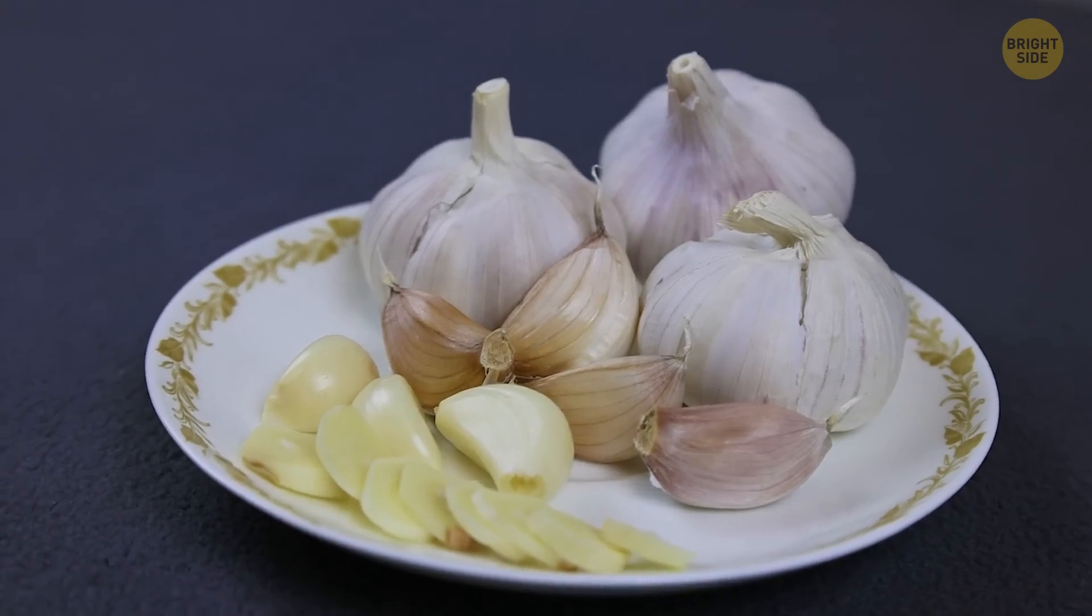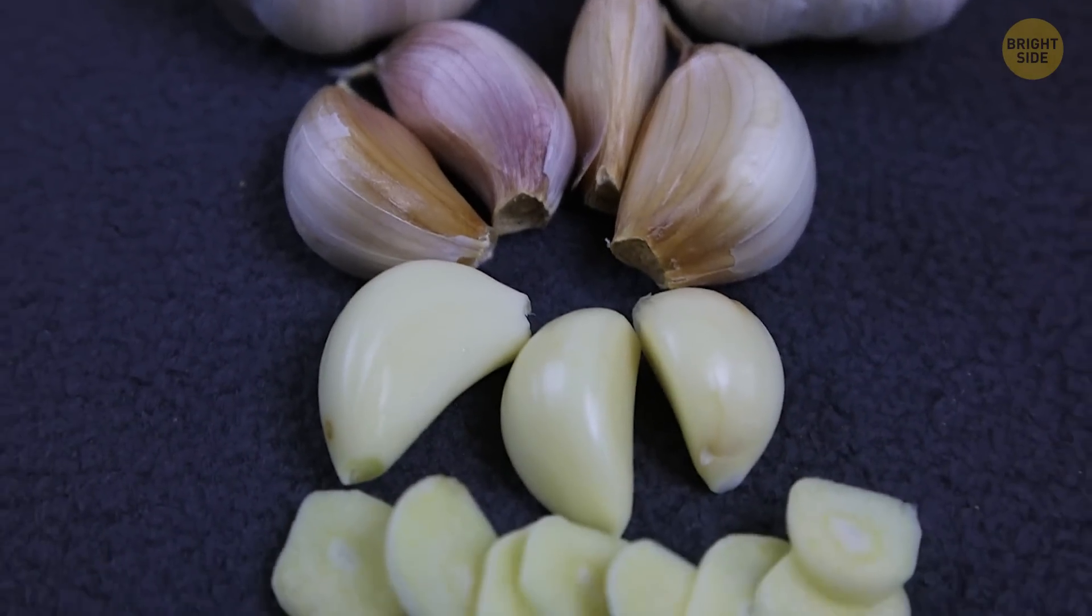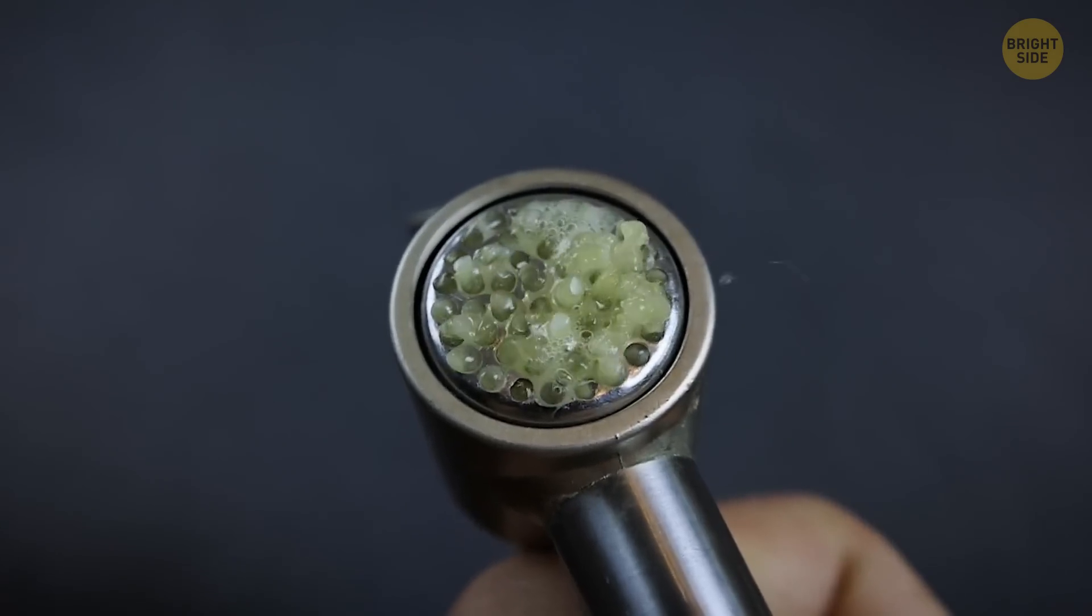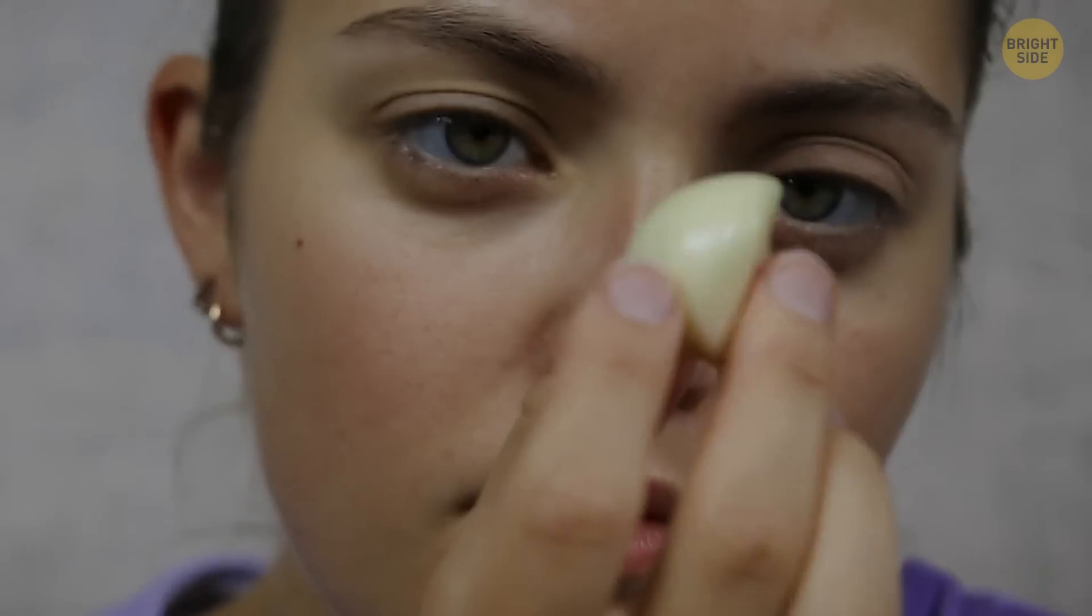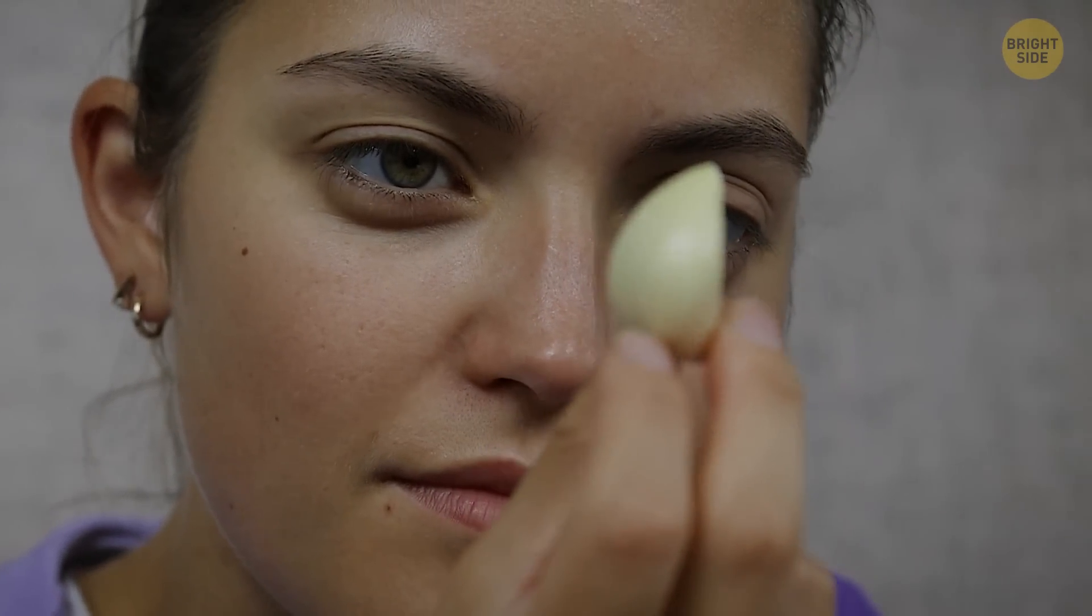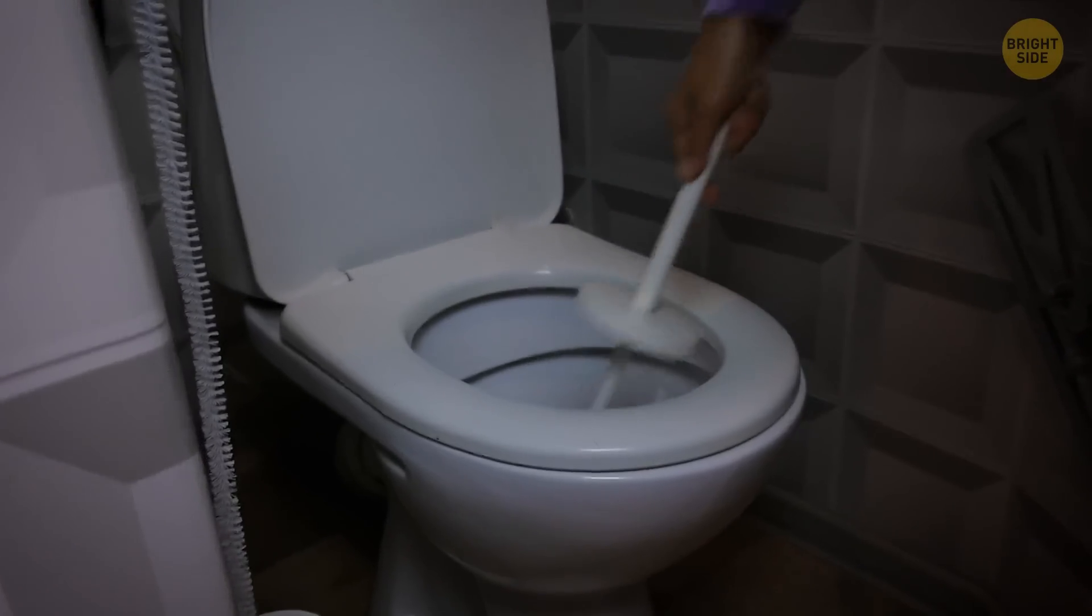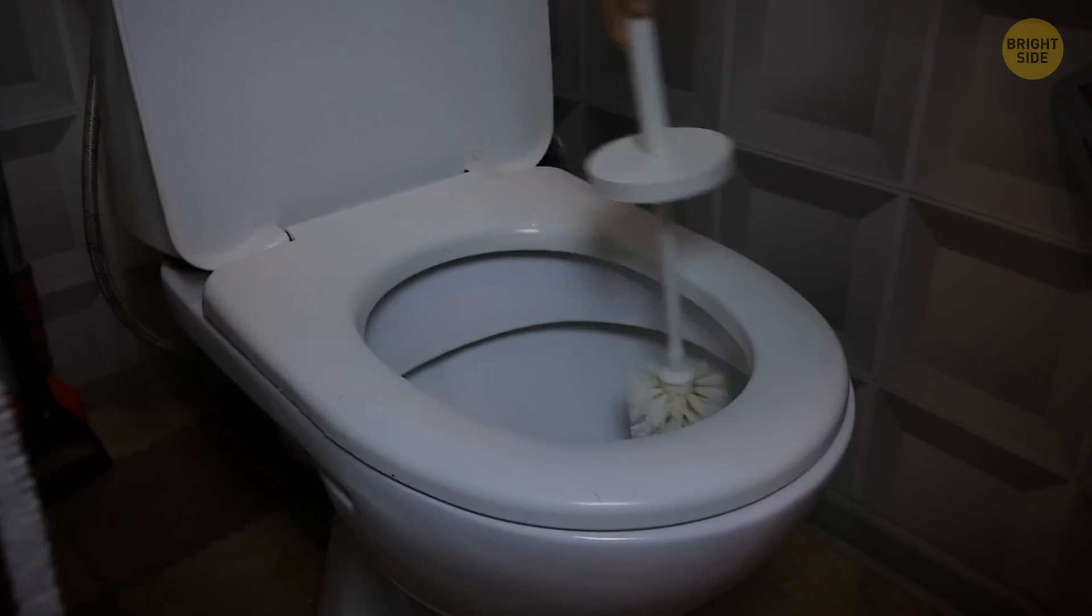Freshly crushed garlic cloves contain a variety of antimicrobial properties. Allicin reduces the buildup of bacteria and fungi. The natural cleansing properties of garlic are not only great for the environment, but they can also help you avoid the need to constantly clean the toilet.